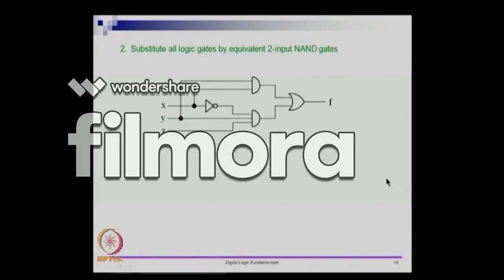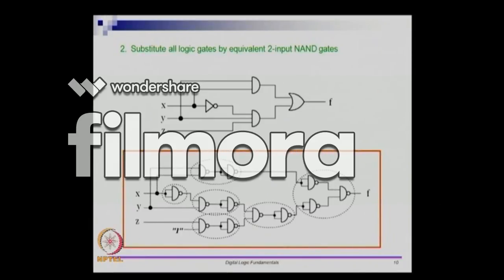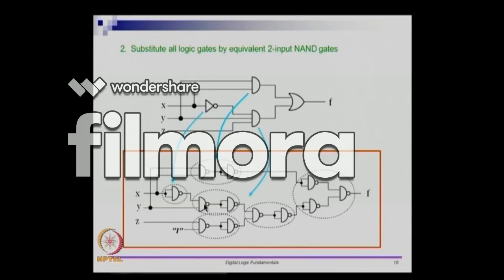Let us see how to do this. The first thing we will do is substitute all the logic gates with equivalent two-input NAND gates. If we take the circuit and substitute everything with two-input NAND gates, we get the circuit shown at the bottom. The inverter is replaced, the AND gate becomes NAND followed by an inverter, and the three-input AND gate is written as a combination of two two-input AND gates.